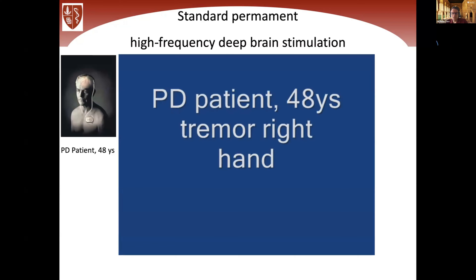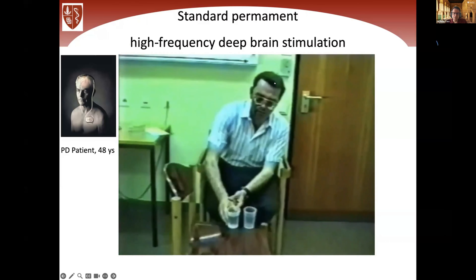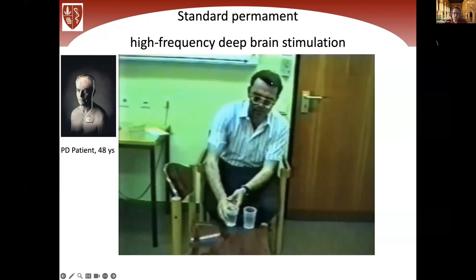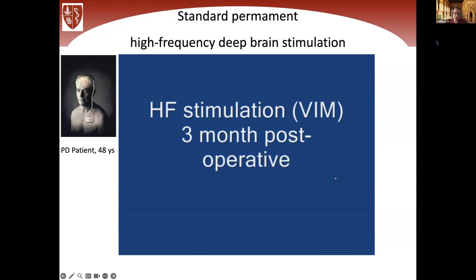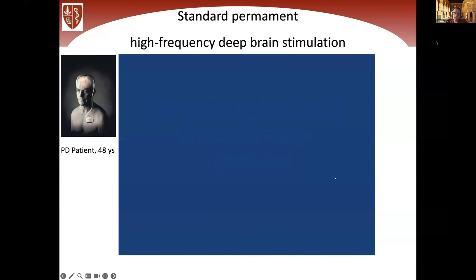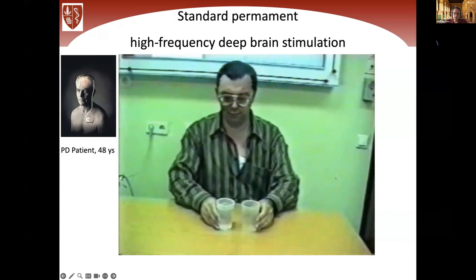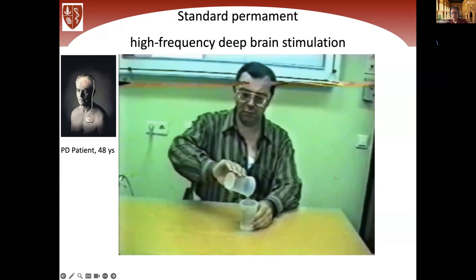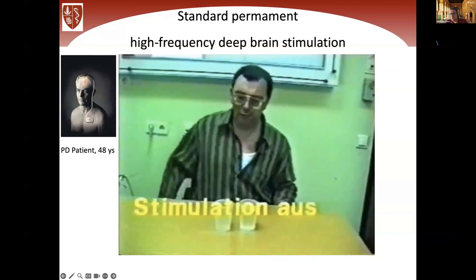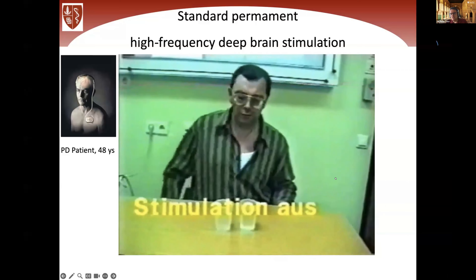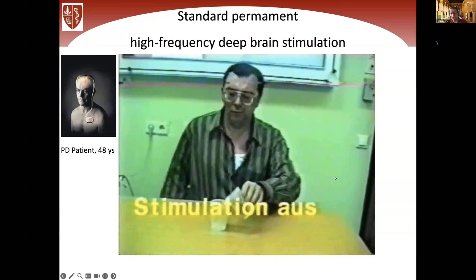Here's an example of a Parkinson's patient treated with deep brain stimulation. The electrode is in the left VIM — the ventral intermediate nucleus of the thalamus. He has the cable and the IPG, the implantable pulse generator. This is the situation three months after implantation, and he's one of the patients who had a huge benefit. The stimulator is now turned off, and as you can see, there are no long-lasting effects — the symptoms come back immediately.